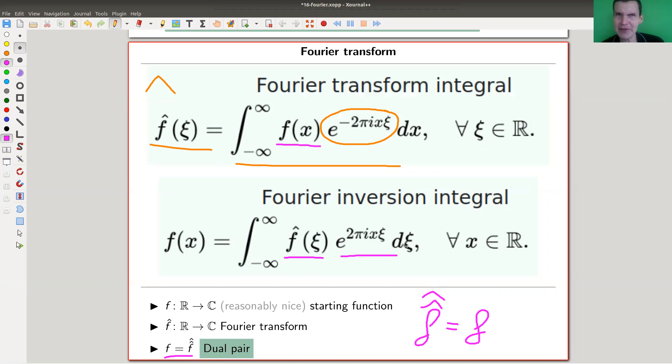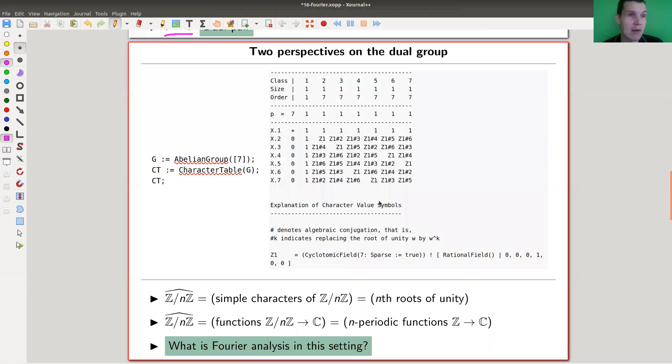So let me just recall for you that there was a dual group and the dual group was basically the group of characters. Here's my example from Z mod - so this was Z mod 7Z again - and it's just given by choosing the corresponding seventh root of unity for the generating character. So the dual group was basically the group of simple characters which corresponds to the roots of unities. That's what I explained in the previous video.